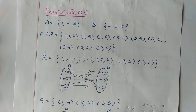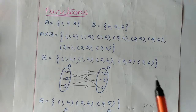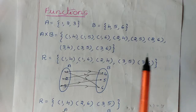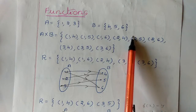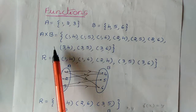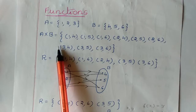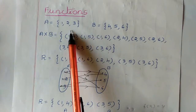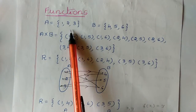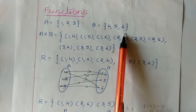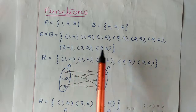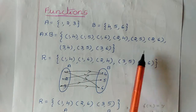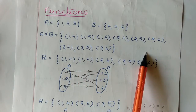Two sets are taken: A is equal to {1, 2, 3} and B is equal to {4, 5, 6}. First we will find the Cartesian product, which is the pairing of A set elements with B set. So here we get nearly 9 ordered pairs.